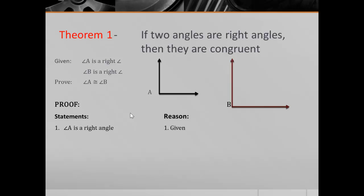Your first statement: angle A is a right angle, and the reason for that is it's given. Now we need to deduce from that that the measure of angle A is 90 degrees, and that's because if an angle is a right angle, then its measure is 90 — that's the definition of a right angle. In this class, you need to write out what the definition is. For proofs, once you do it once in each proof, you don't need to do it again.